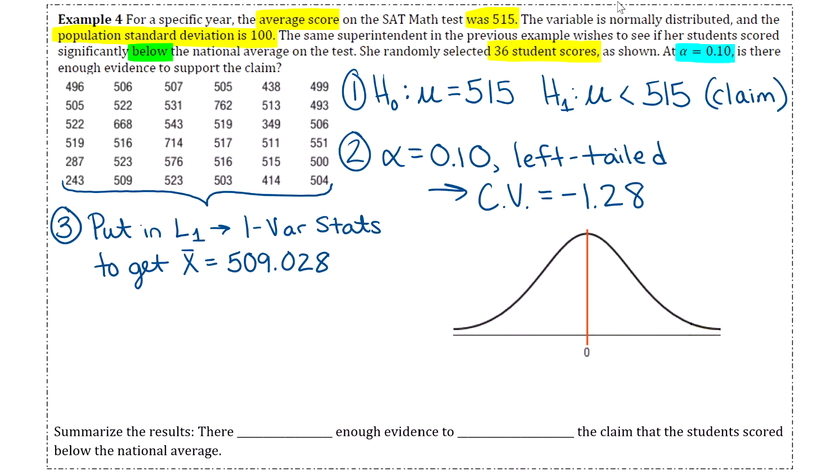Okay, so once you know what your sample mean is, then we can plug into our test value formula. So Z is going to be equal to the sample mean minus the population mean. So 509.028 minus 515. And then you divide by σ divided by the square root of n. So σ tells us in the question is 100. And then n is going to be 36 because there are 36 student scores in that sample. So we'll have 100 divided by the square root of 36. And then when you type that in your calculator, just make sure that you put parentheses around the entire numerator and the entire denominator. And then we'll round our Z value to two decimal places. So you should get -0.36.